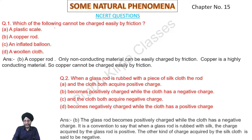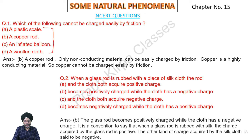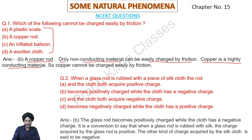We will perform NCERT questions. Question 1: Which of the following cannot be charged easily by friction? The options are: a plastic scale, a copper rod, an inflated balloon, a woolen cloth. The answer is a copper rod. Only non-conducting materials can be easily charged by friction. Copper is a highly conducting material, so copper cannot be charged easily by friction.